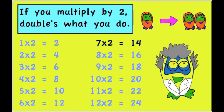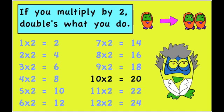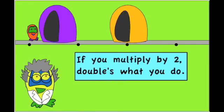Six times two is twelve. Seven times two is fourteen. Eight times two is sixteen. Nine times two is eighteen. Ten times two is twenty. Eleven times two is twenty-two. Twelve times two is twenty-four.